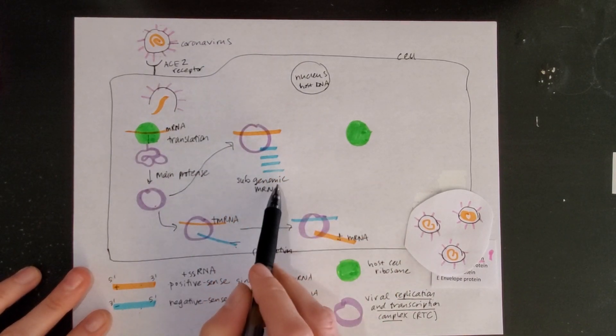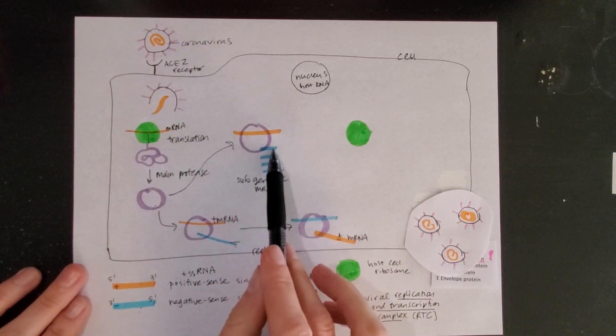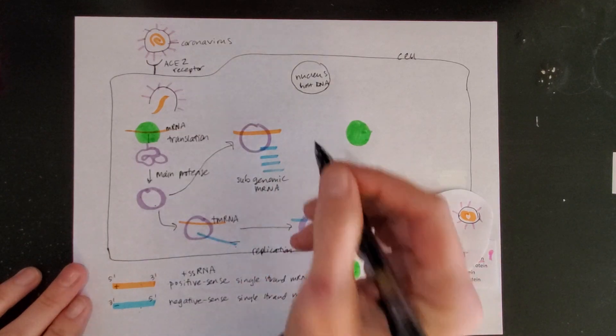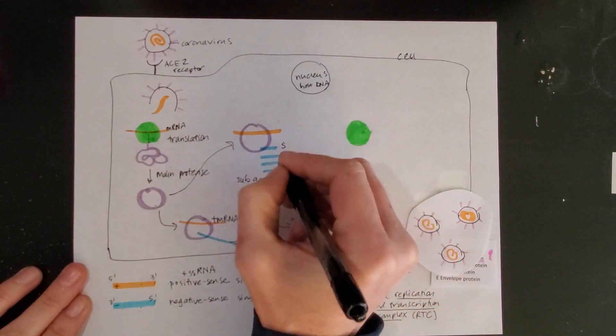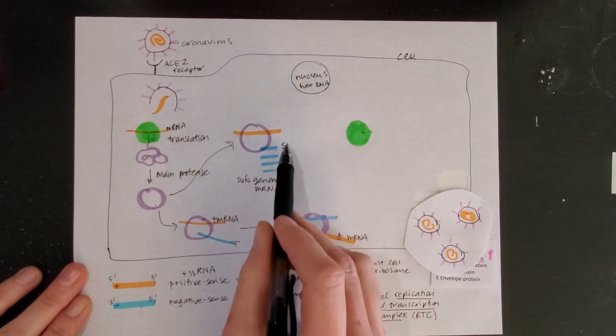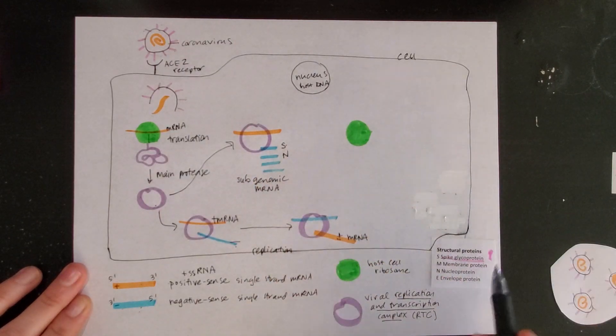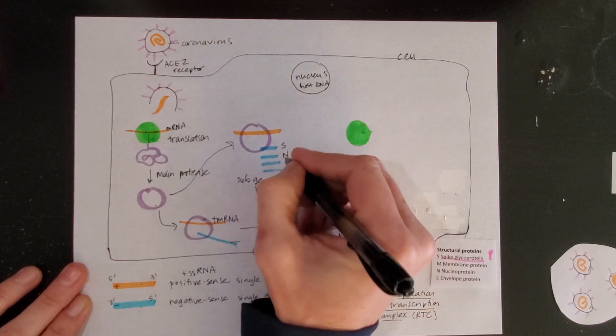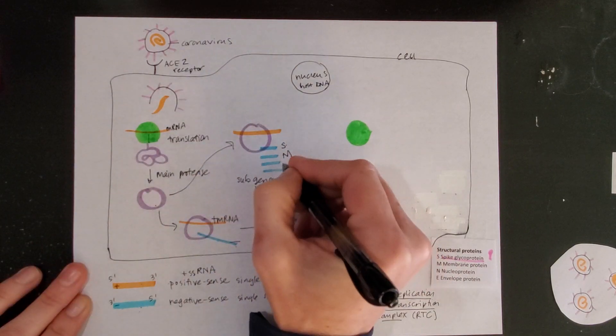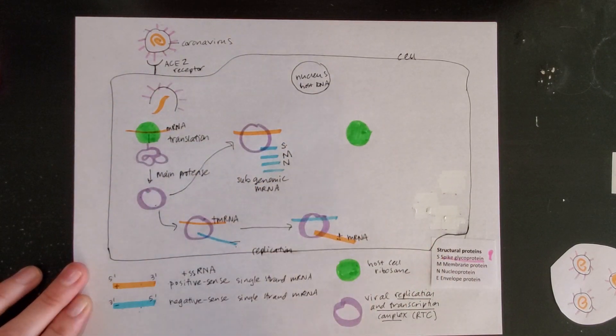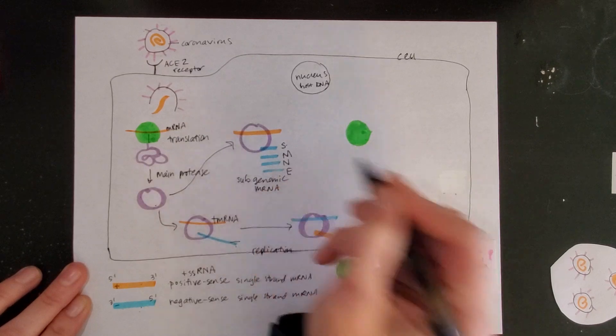In other words, smaller than the whole genome. Each of these fragments that I've shown you here that were produced code for one of the four structural proteins. We have the spike protein, the membrane protein, the nucleoprotein or nucleocapsid, and the envelope protein.